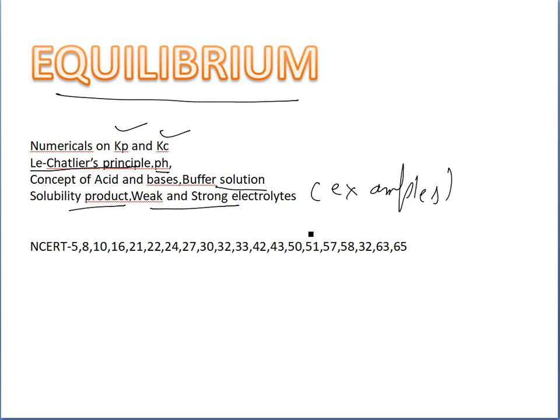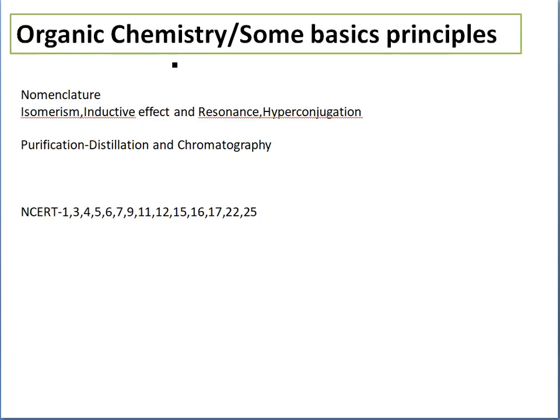And the numericals of strong and weak electrolyte. These are the NCERT questions. Next, moving towards organic chemistry, some basic principles. First of all, IUPAC nomenclature. This is the basic part, you have to learn the IUPAC nomenclature: word root, prefix, suffix. Isomerism, inductive effect, resonance effect, hyperconjugation, these are scoring topics in the exam. Purification, distillation, chromatography also asked in the exam.